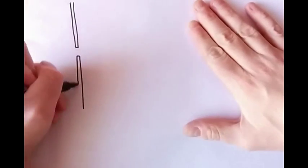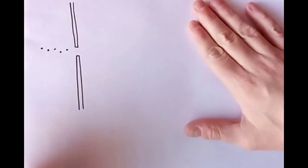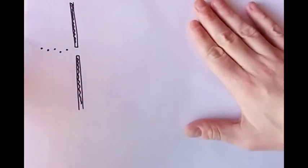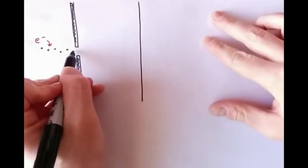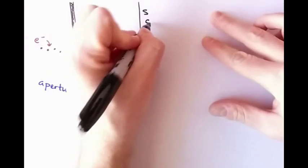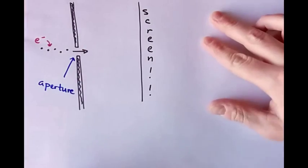One day you decide to do an experiment. You decide to send some electrons flying through a little aperture, a little doorway. And when they go through the aperture, if they make it to the other side, they'll hit a screen, and that screen will glow if electrons hit it. So you do this experiment.